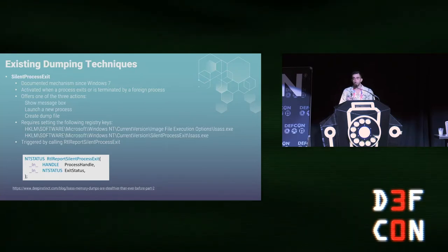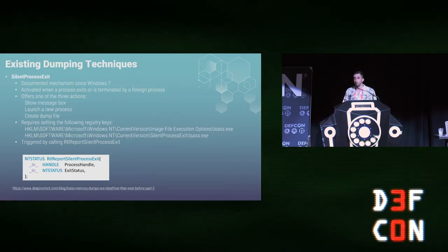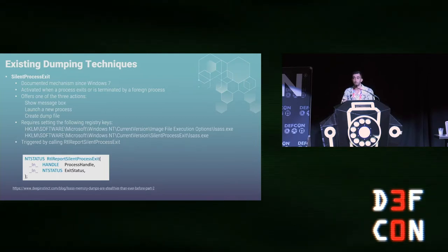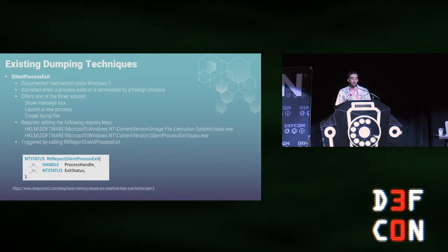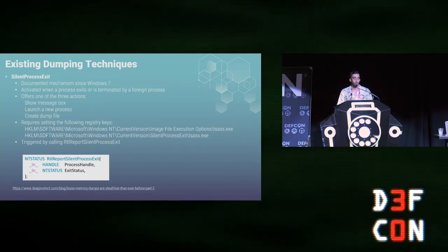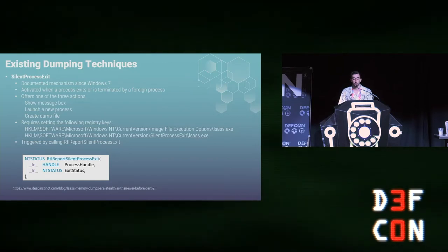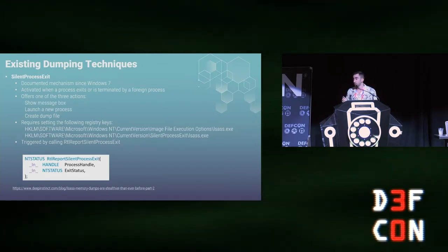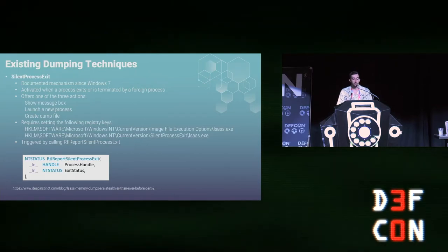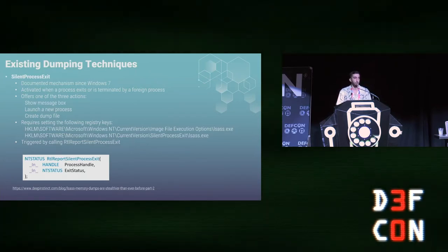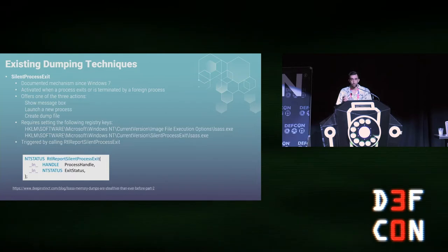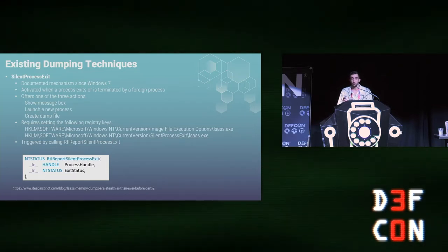You can configure this mechanism using the registry — simply create the keys and values for the process this mechanism should operate on and trigger it by calling RtlReportSilentProcessExit. Behind the scenes it communicates with the Windows Error Reporting service, which I'll refer to as the WER service for the rest of this talk.